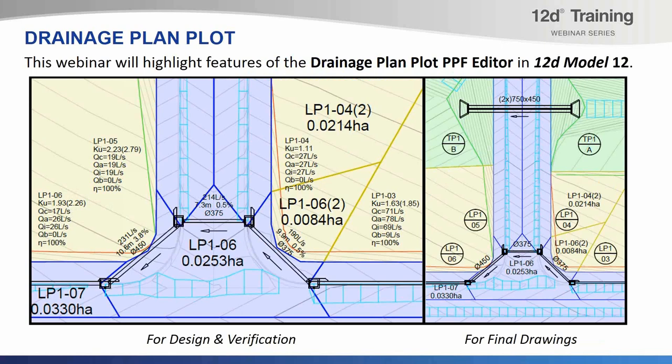On screen there are a couple of examples — two different kinds of plots it can produce. This is specifically for stormwater but it has other applications as well. On the left hand side we have an example of quite a detailed plot showing a lot of information useful while you're in the middle of the design phase, to visualise and see the numbers coming out of your model when you run stormwater analyses. On the right hand side we see a simpler example, the kind of thing that ends up on final production drawings, with basic structure names, pipe sizes, and catchment plans.